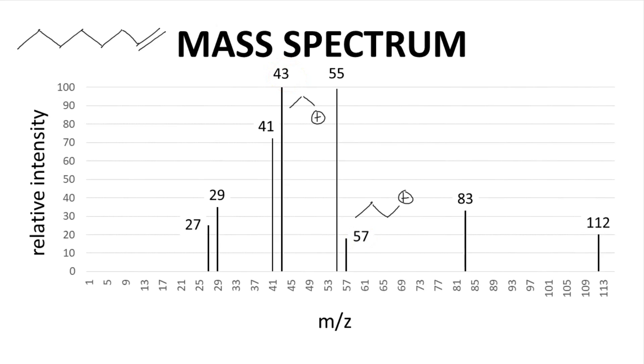By the way, 43 is the tallest peak in the spectrum, so it is the base peak. Lose 14 more to get to 29. That would be an ethyl cation.